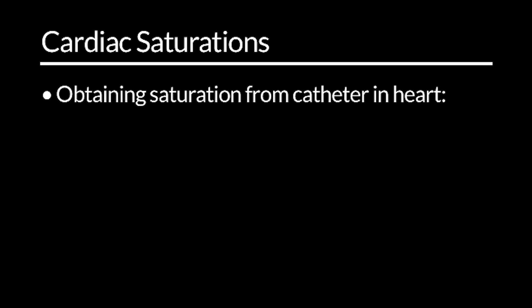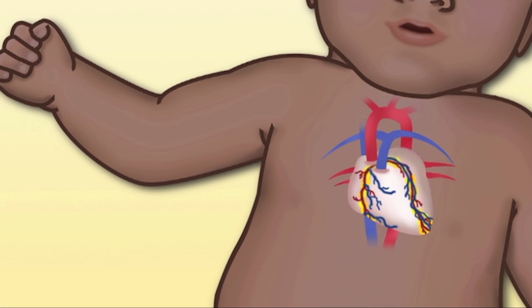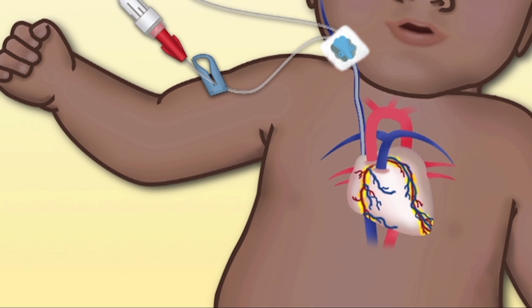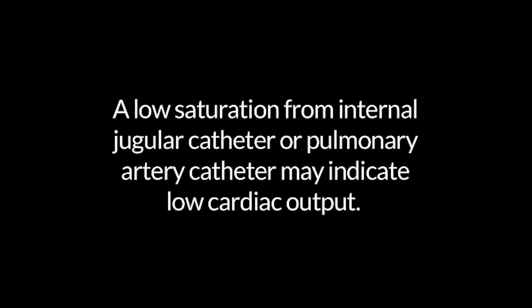Obtaining a saturation from a catheter within the heart gives valuable information related to cardiac output and intracardiac shunting. The best location to obtain a mixed venous saturation is from a pulmonary artery catheter or an internal jugular catheter. A low saturation from the internal jugular catheter or the pulmonary artery catheter may be an indication of low cardiac output.